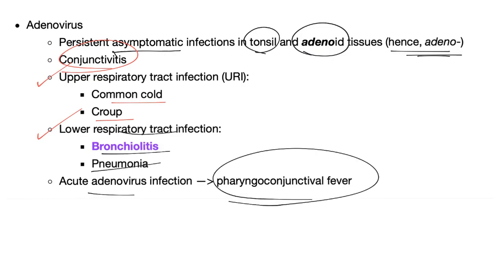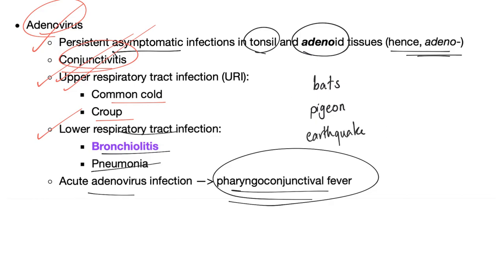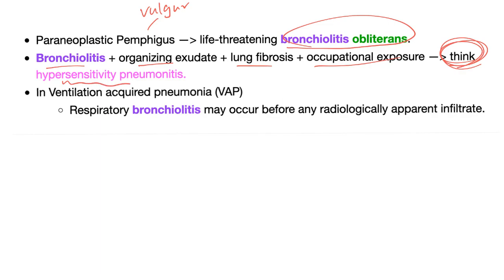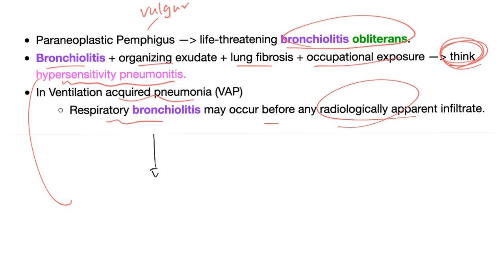Acute adenovirus can lead to pharyngoconjunctival fever. Pavlovian associations to remember: adeno → conjunctivitis; bats → histoplasmosis; pigeon → cryptococcus; earthquakes → coccidioidomycosis. Paraneoplastic pemphigus can lead to life-threatening bronchiolitis obliterans. Bronchiolitis plus organizing pneumonia plus lung fibrosis plus occupational exposure — think hypersensitivity pneumonitis, which we'll discuss later. In ventilation-acquired pneumonia, respiratory bronchiolitis may occur even before any radiologically apparent infiltrate — so use your clinical sense and don't rely solely on imaging.